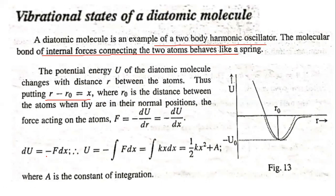du is equal to minus of f into dx. Integrating this, the potential energy equation becomes half of k·x² plus a constant a.